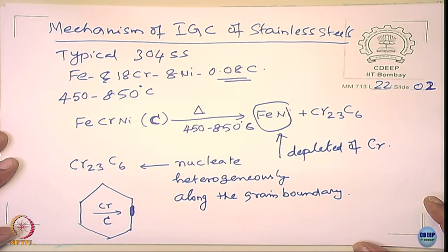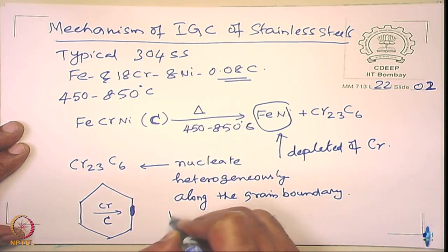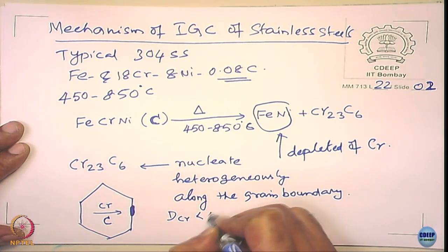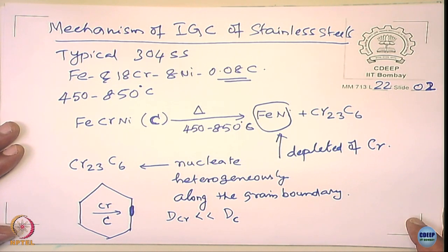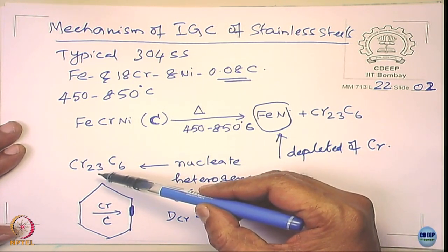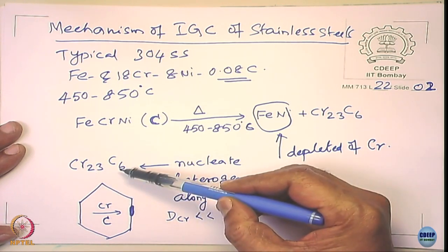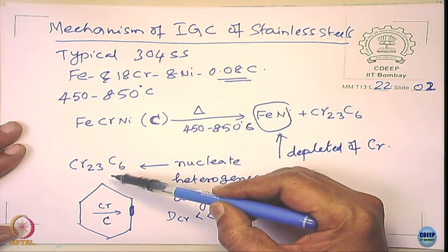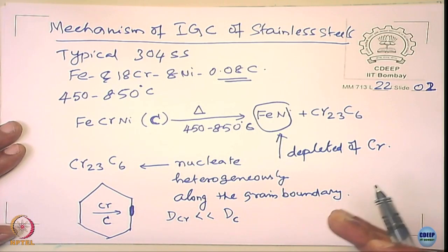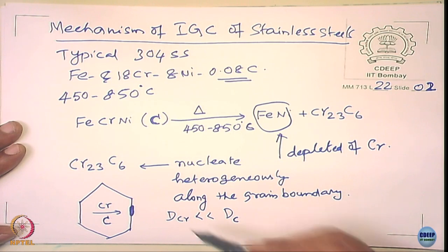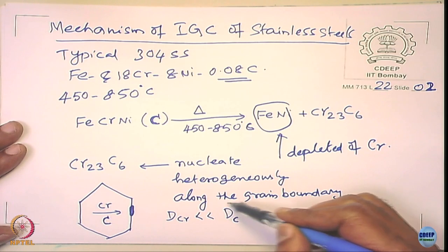The consequence is that the diffusivity of chromium is much smaller than the diffusivity of carbon. Please notice the chemical formula of the carbide: Cr₂₃C₆ — that is 23 chromium to 6 carbon, meaning approximately 1 carbon takes away about 4 chromium. So you need to supply more chromium to form the carbide, but the diffusivity of chromium is lower compared to carbon. The consequence is that the chromium content drops significantly near the grain boundary.